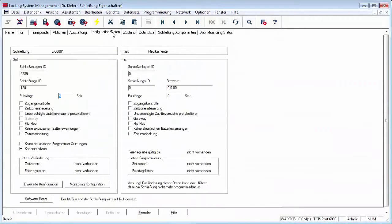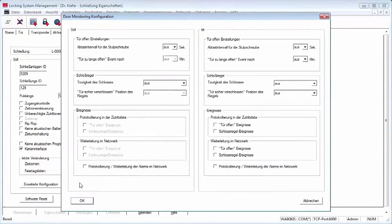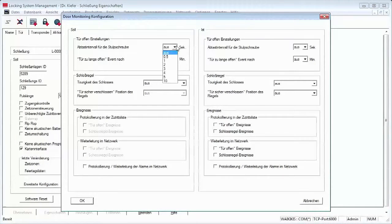I now determine how the cylinder is to behave in the configuration menu. First, I turn the pulling interval down to one second because people can open the door to a medical cabinet very quickly.